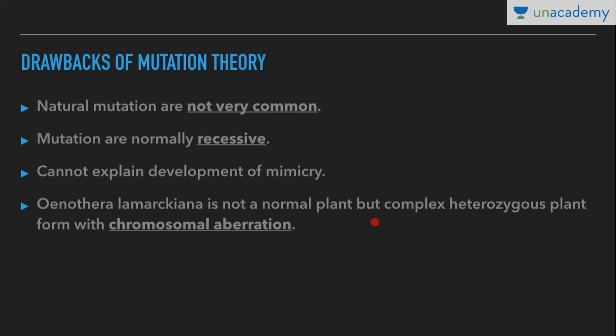Oenothera lamarckiana is not a normal plant but a complex heterozygous plant formed with chromosomal aberrations. Hugo de Vries thought the variations he observed were due to mutation, but they were actually due to chromosomal aberration, so his theory was not completely true. However, some points in its favor are that mutations are actually the source of variations and can explain both retrogressive and progressive evolution.